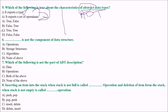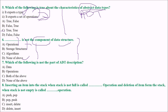Next: which of the following is not a component of data structure? The answer is none of the above — meaning operations, storage structures, and algorithm are all components of data structure.